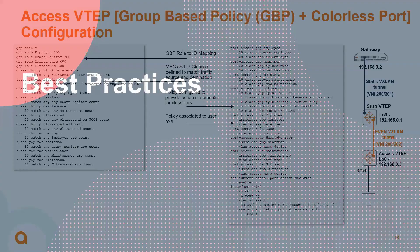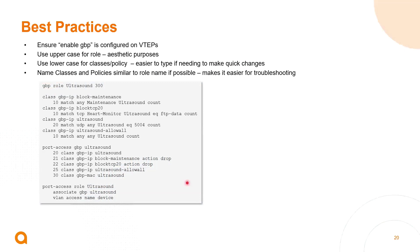For best practices: make sure GBP is enabled globally so that IDs map to roles. You can use uppercase for role names for aesthetic clarity. For classes and policies, use lowercase and name them similarly to the roles so you know what they map to during troubleshooting — especially important for complex deployments.